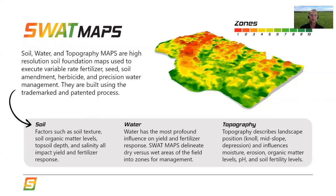SWAT maps are a trademarked and patented process. They're based on soil, water, and topography, and these three things are all interrelated. Soil would include things like soil texture, soil organic matter levels, topsoil depth, and in some areas, levels of salinity.